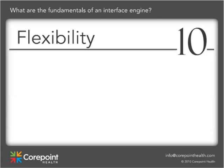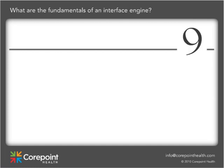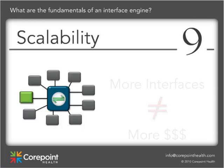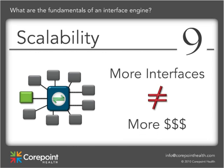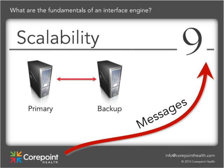You need an engine with the ability to adapt to and use different healthcare standards and communication protocols efficiently. As your number of interfaces continues to grow, your integration engine needs to scale in performance to meet the new demands without an equal scale in cost — whether it is increased message flow through the engine, or a native high availability solution to ensure constant continuous data flow. Scaling to new requirements is a must.